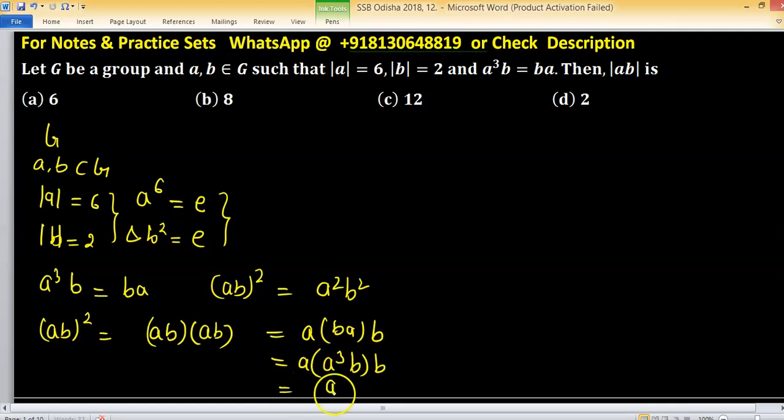Now again apply associativity a raised to the power 4 into b square and b square equals to identity. So what we have? We have ab square equals to a raised to the power 4.